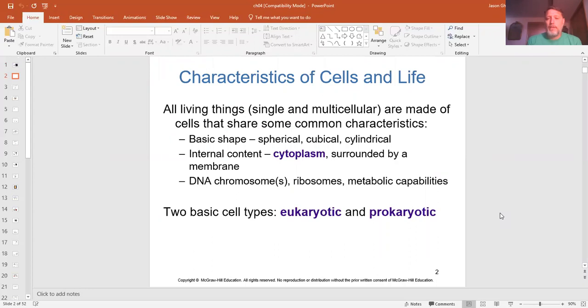All living things are made up of cells. They're either single-celled or multicellular. They have basic shapes that are pretty consistent throughout life that we know of. The insides all have cytoplasm surrounded by a membrane, and life as we know it has to have DNA, ribosomes, and some metabolic capabilities. Metabolic capabilities means chemical reactions that they have inside them.